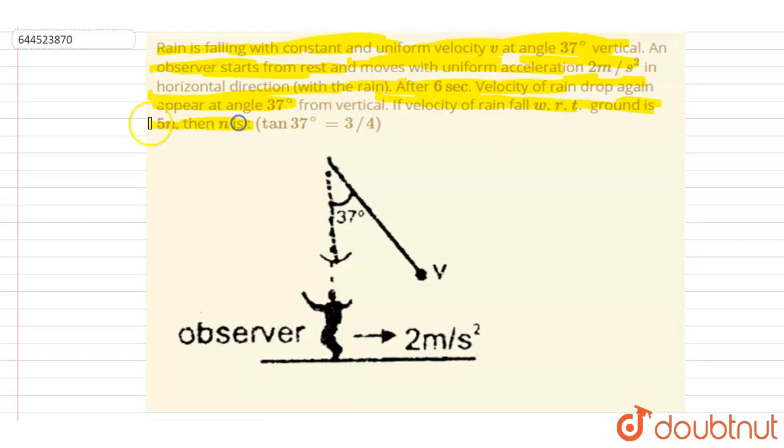If the velocity of the rainfall with respect to ground is 5n, and you have to find out the value of n here. So if you see, this is velocity of rain with respect to the man that is again appearing at 37 degrees. So velocity of the rain with respect to the man, it will be this velocity again appearing at 37 degrees.